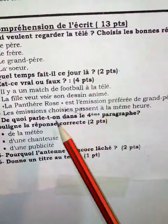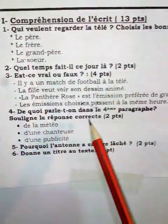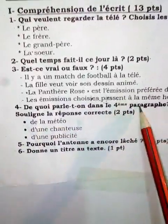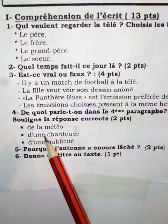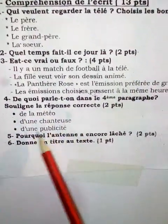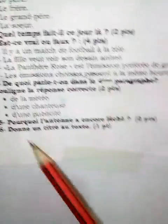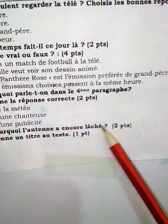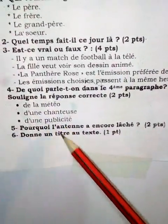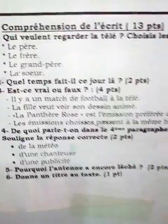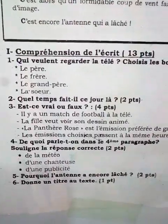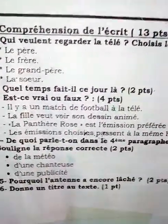Numéro 4 : de quoi parle-t-on dans le quatrième paragraphe ? Le quatrième paragraphe, c'est ici. Souligne la réponse correcte. Le quatrième paragraphe parle de la météo, d'une chanteuse, d'une publicité. Numéro 5 : pourquoi l'antenne a-t-elle encore lâché ? Donne un autre titre à ce texte. Donc là, il faut toujours faire très attention à bien lire les questions, les consignes, et aussi revoir et relire ce que tu as écrit quand tu as répondu.